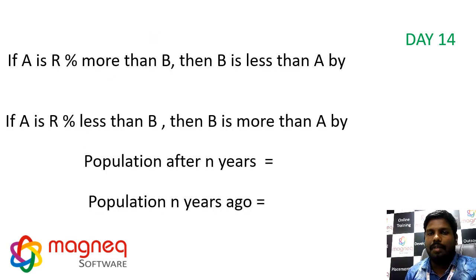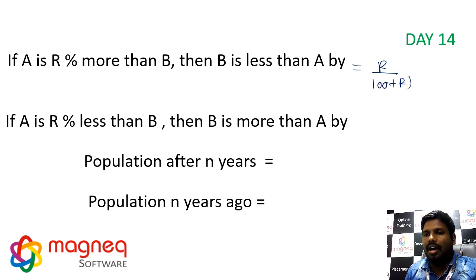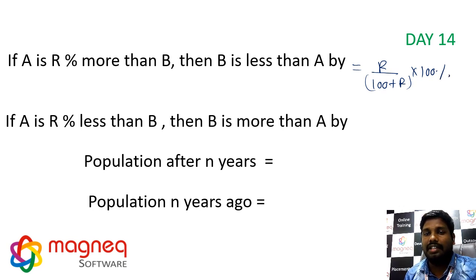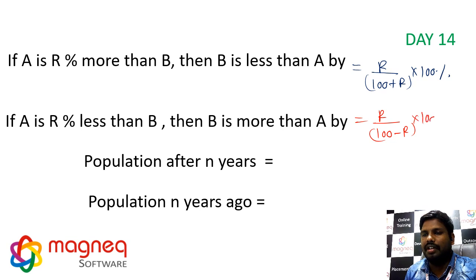If A is R percent more than B, then B is less than A by R by (100 plus R) into 100 percentage. If A is R percent less than B, then B is more than A by R by (100 minus R) into 100 percentage.